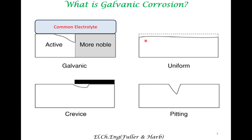In the previous lectures, we covered uniform corrosion and two forms of localized corrosion. There is another form of localized corrosion, which is galvanic corrosion, which is the subject matter of this lecture. In galvanic corrosion, there are two different metals or metallic alloys exposed to a common electrolyte, and corrosion occurs in one of the metals — this is the active metal, the region where corrosion occurs.